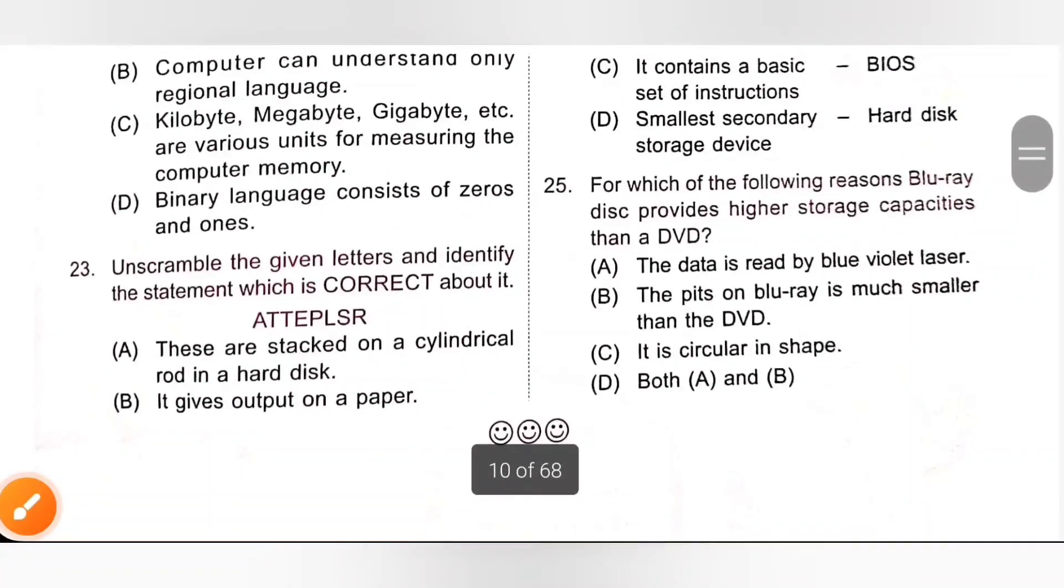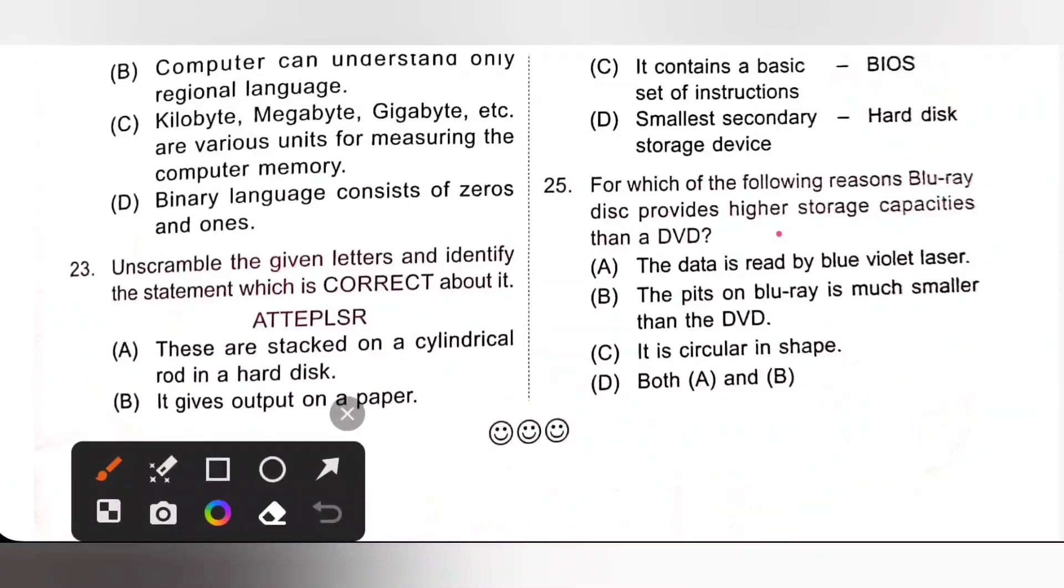Next one. Last one. For which of the following reasons, Blu-ray disc provides higher storage capacities than a DVD? A, the data is read by blue-violet laser. No. B, the bits on Blu-ray is much smaller than the DVD. Yes. C, it is circular in shape. No. Because both are circular in shape.